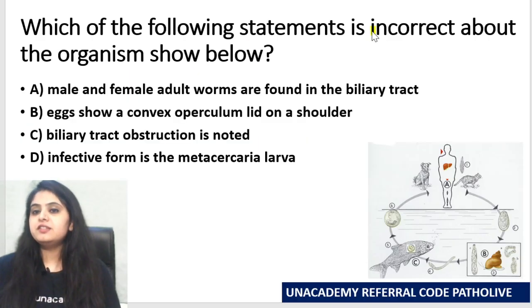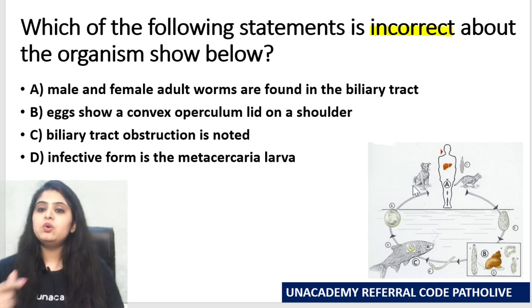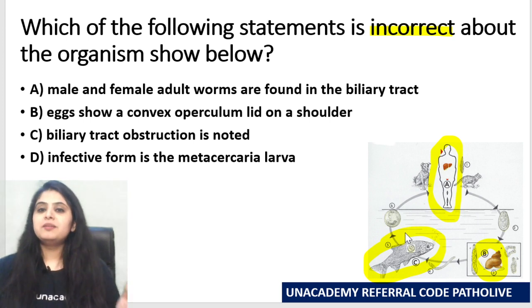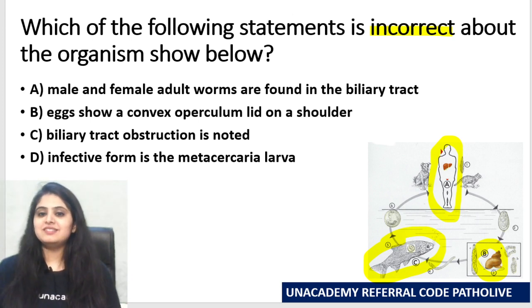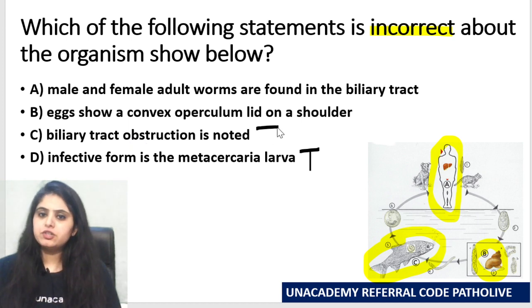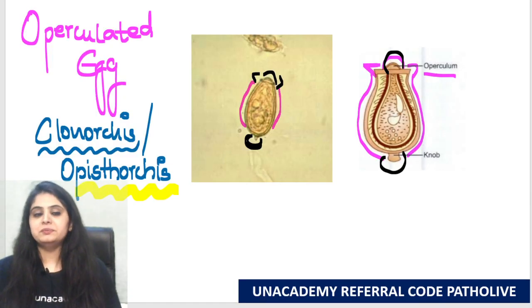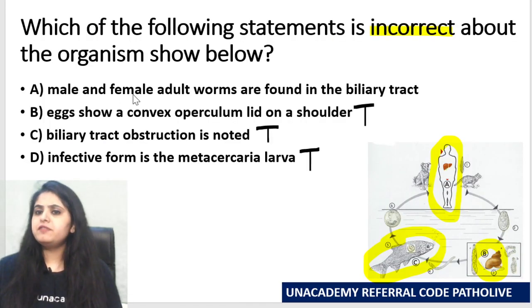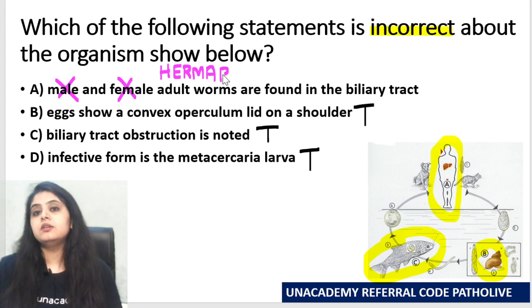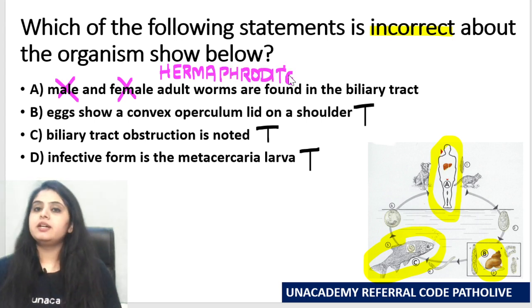Which of the following statements is incorrect about the organism shown? Pick up the hosts: man, snail, and fish — Clonorfish — Clonorchis sinensis. The options: infective form is metacercaria larva — true. Biliary tract obstruction noted — yes, definitely. Eggs show a convex operculum lid on a shoulder — exactly the egg I showed you. Lastly, male and female adult worms are found in the biliary tract — no. Male and female forms are not separate because this organism is a hermaphrodite. So the incorrect statement is that one.